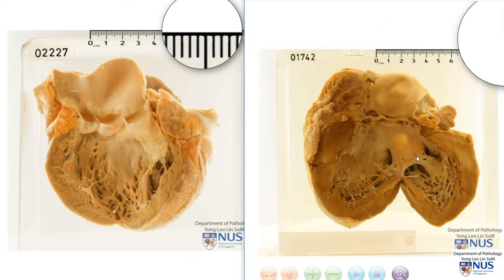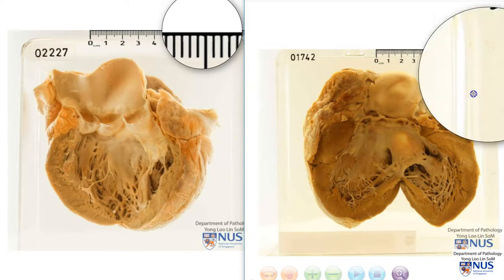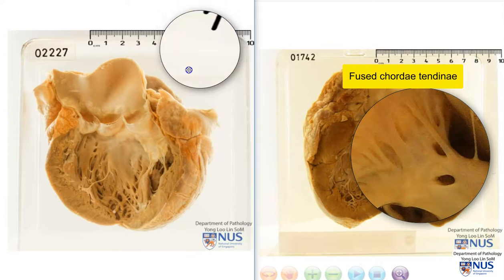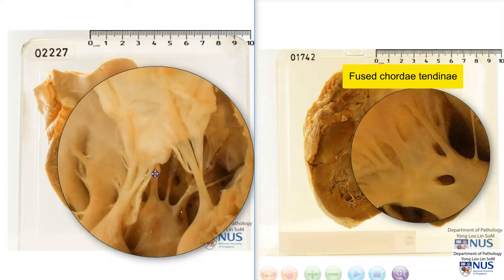In this particular view, we are not able to really see the orifice of the mitral valve, but we can appreciate that in this region, which is the region of the chordae tendineae, they are also abnormal. Here, where the chordae tendineae should usually be very delicate, in some areas we can see that they are actually fused to each other. Let's compare them with the chordae tendineae in the relatively normal mitral valve.